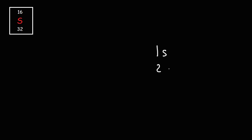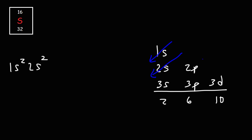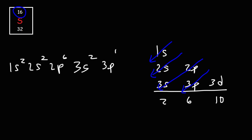Let's write the sublevels for sulfur: 1s, 2s, 3s. Sulfur is in the third row of the periodic table, so we don't need to go below 3s. Starting with 1s2, our goal is to get up to atomic number 16. After 1s is 2s2, then 2p6 — the total is now 10. After 2p is 3s2, giving a total of 12. To get to 16 we need four more, so we use 3p4, because 2+2+6+2+4 equals 16.